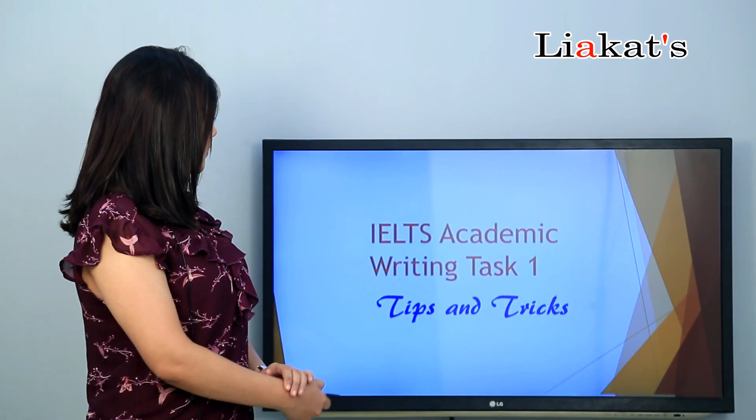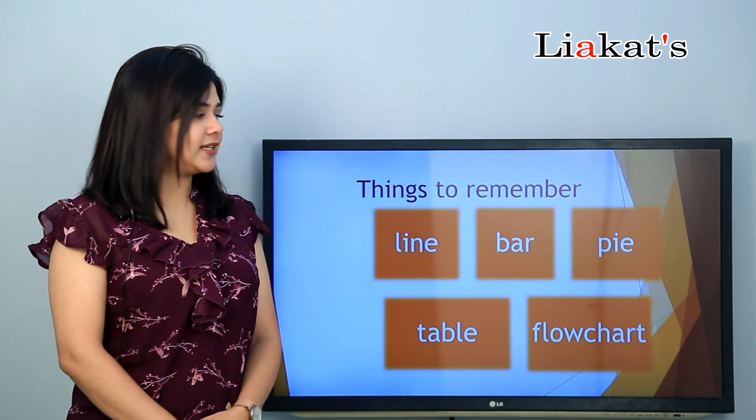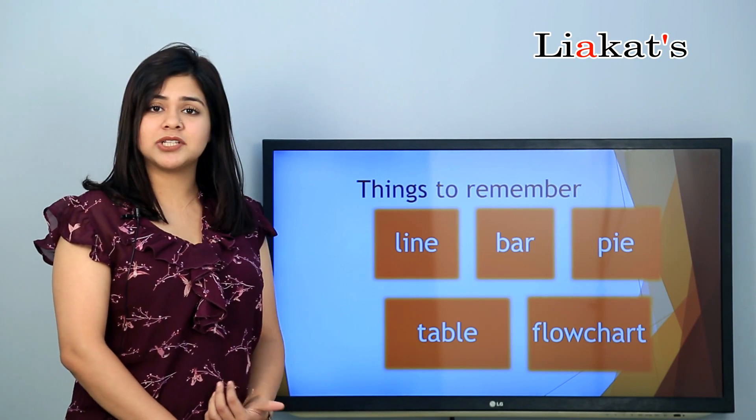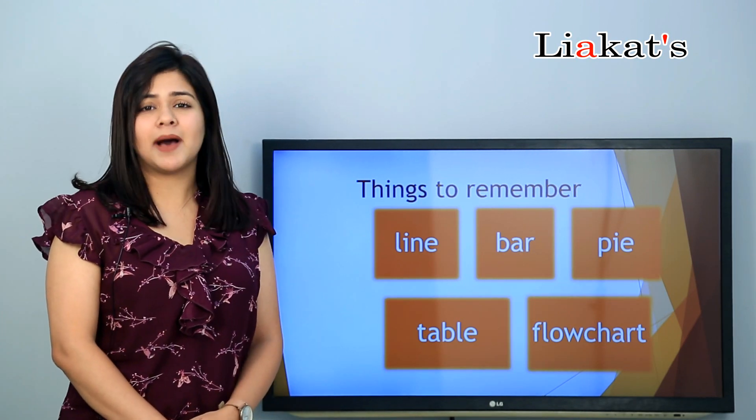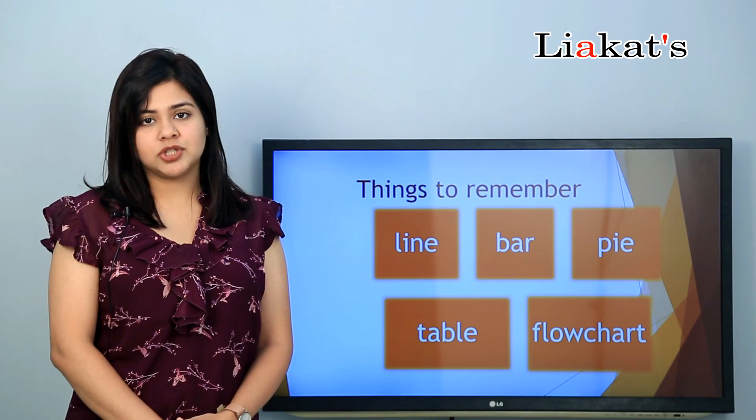There will be a chart or a graph from which you need to compare and analyze and then write the answers. So what are the chart types for academic students? There can be line graphs, there can be a bar chart, there can be pie charts, a table, or a flow chart.